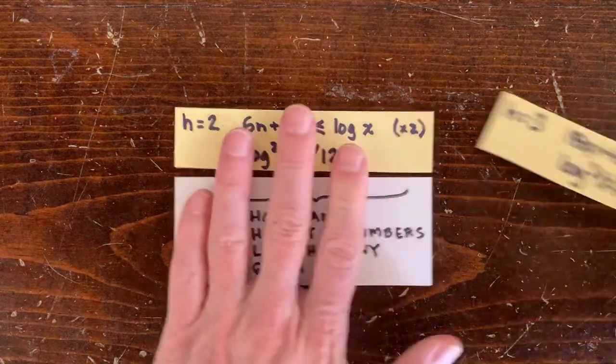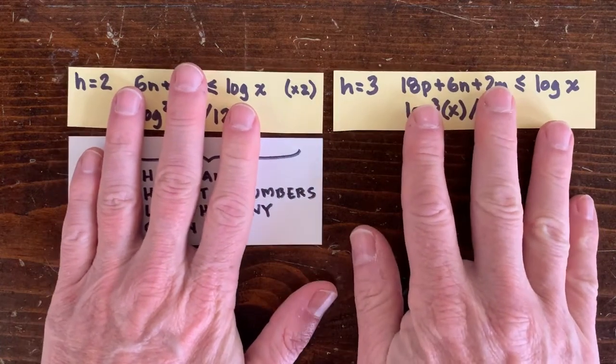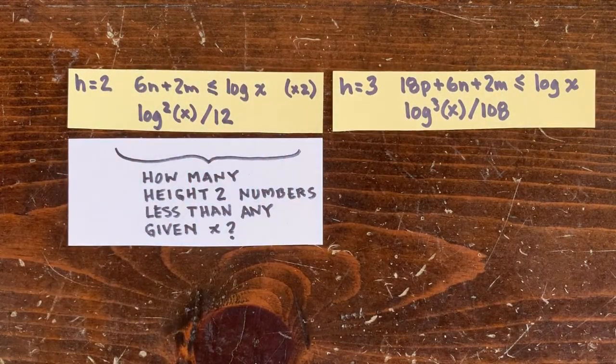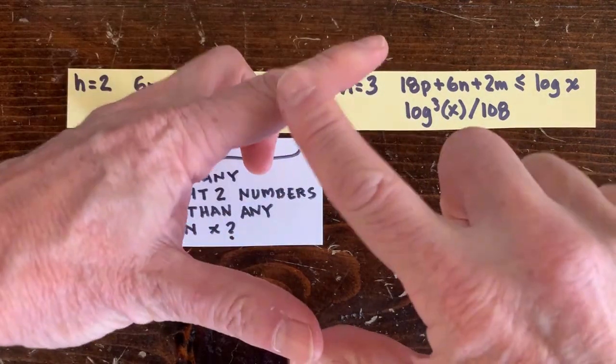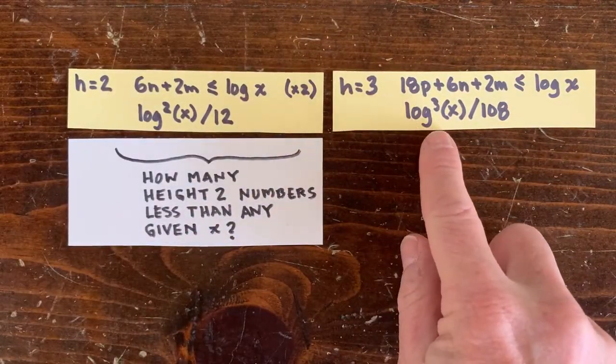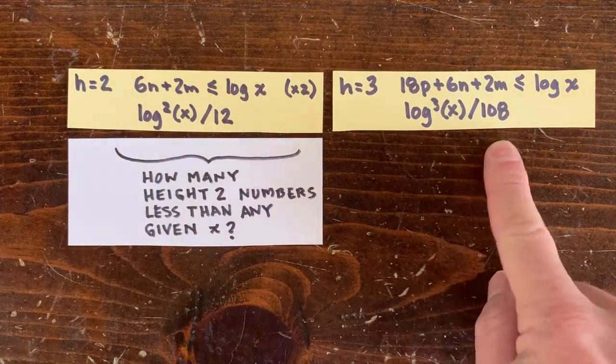And then to estimate the number of height 3 integers, we can count solutions for this inequality. And now instead of half a rectangle, we've got 1 sixth of a cube, 3 factorial. So log cubed x over 6 times 18.